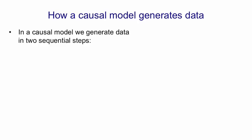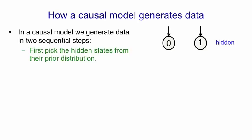So in a causal model, we use two sequential steps. These are the latent variables, or hidden units, and we first pick the states of the latent variables from their prior distributions. Often in a causal model, these will be independent in the prior, so their probability of turning on, if they were binary latent variables, would just depend on some bias that each one of them has.